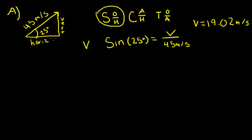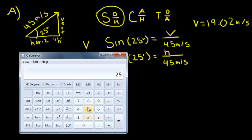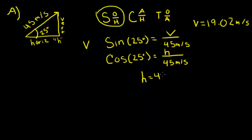Now to solve for the horizontal, which we'll call H, we could use either cosine or Pythagorean theorem. Let's use cosine for more practice. We're looking for the adjacent side and we know the hypotenuse, so we write: cosine of 25 degrees equals H over 45 meters per second. We plug this into our calculator and our answer is 40.78 meters per second.